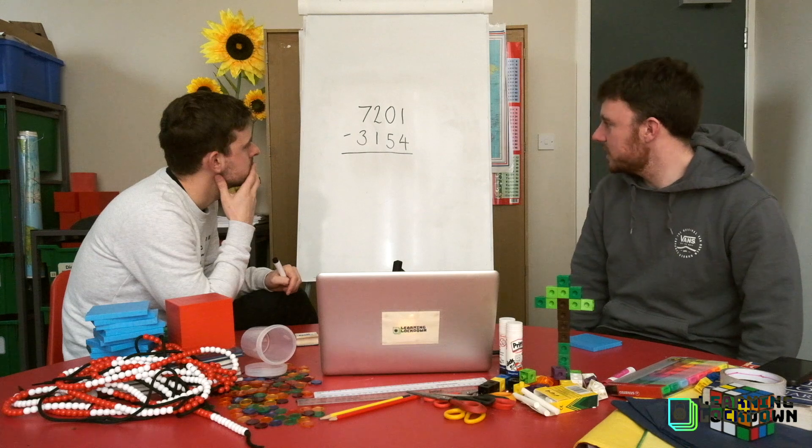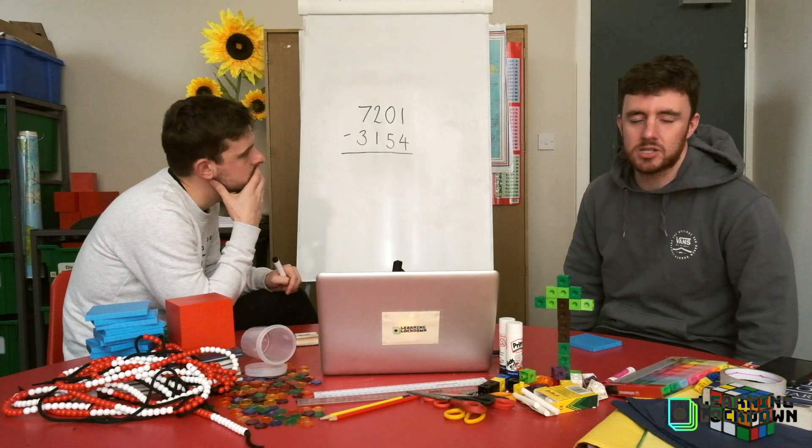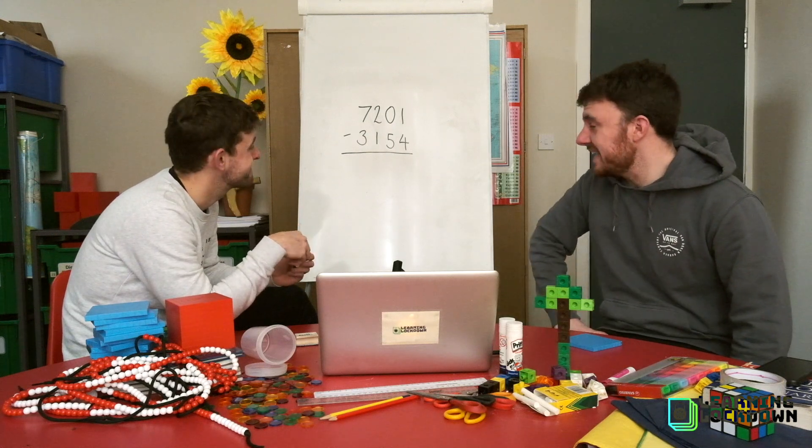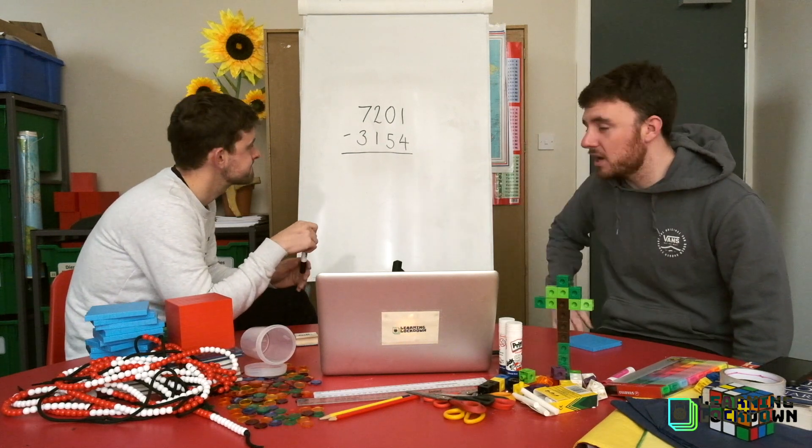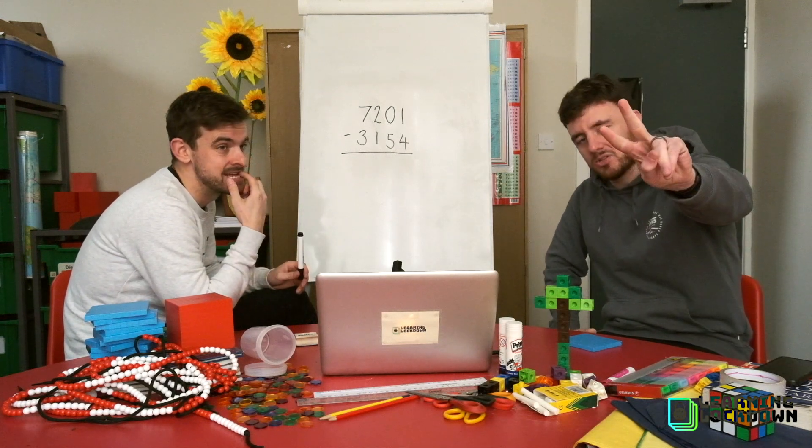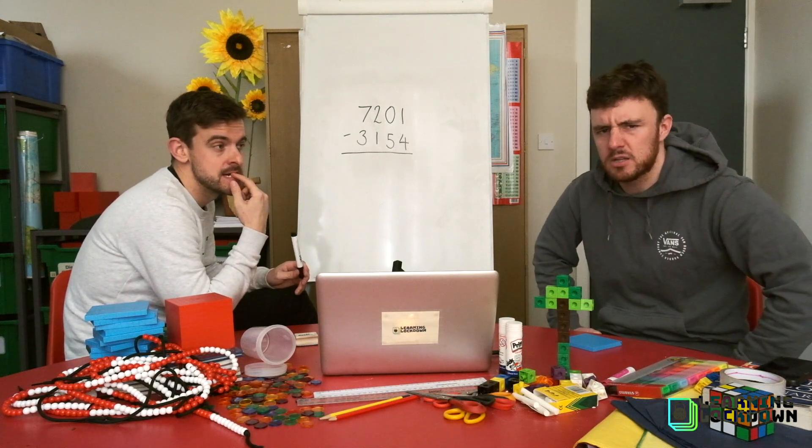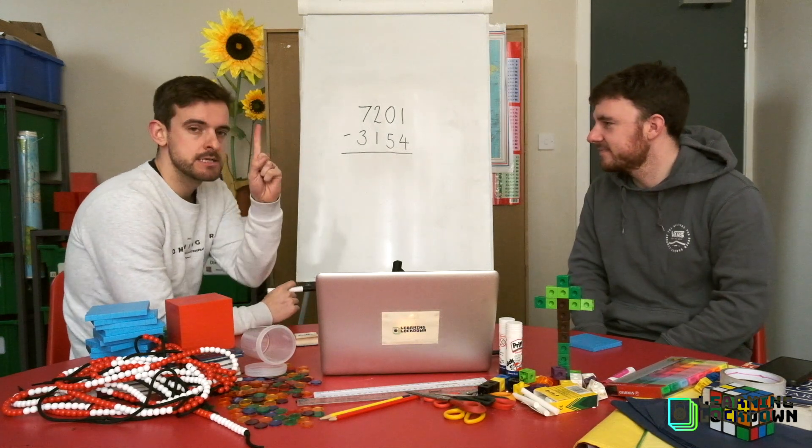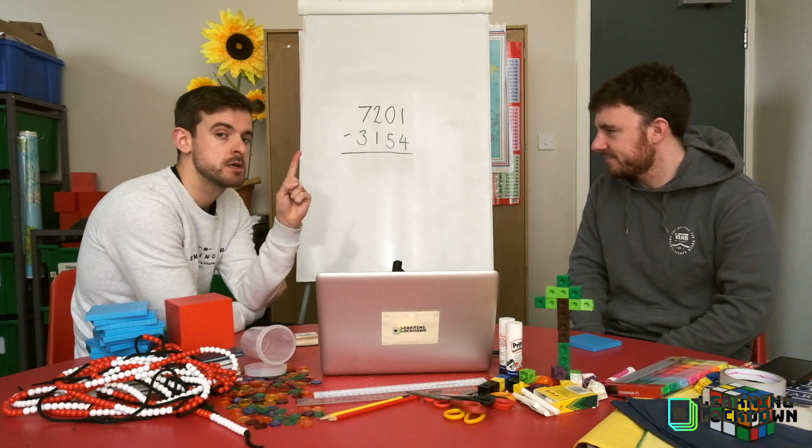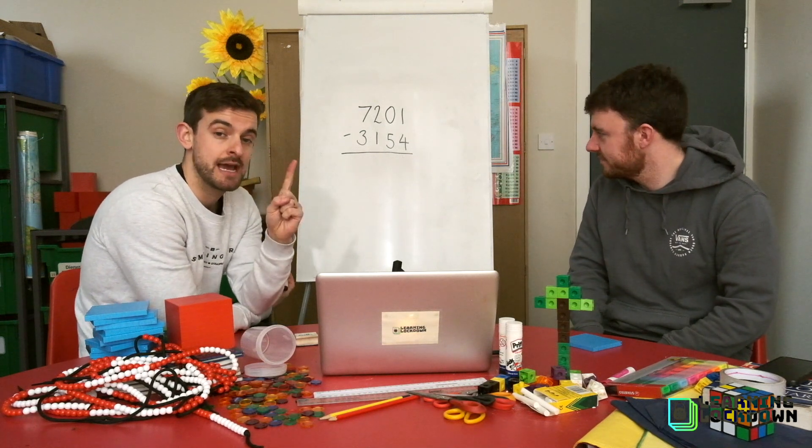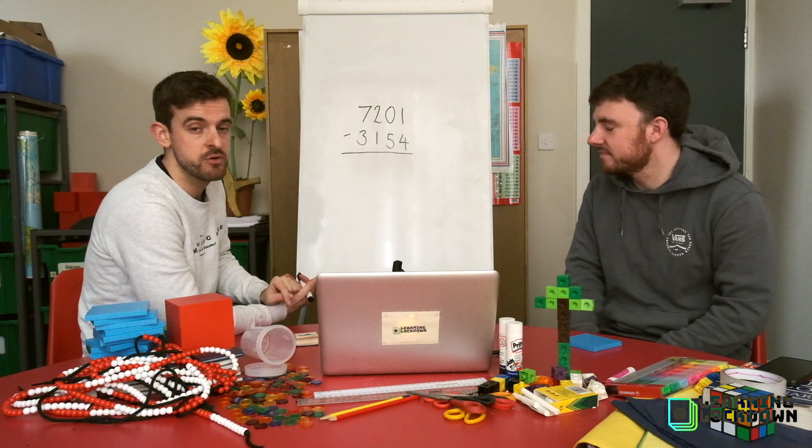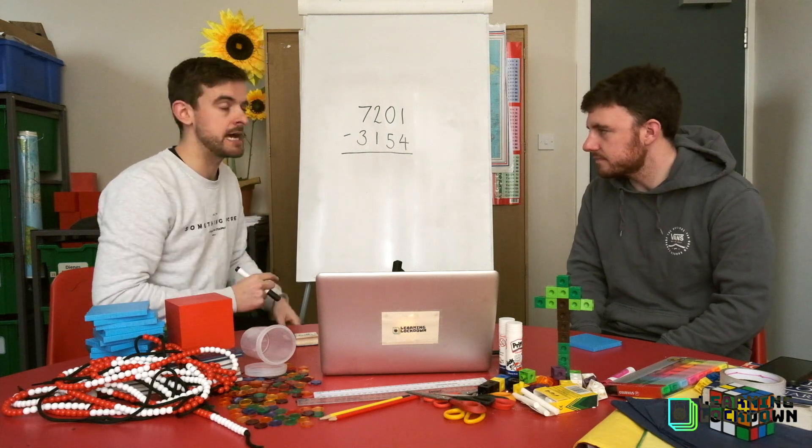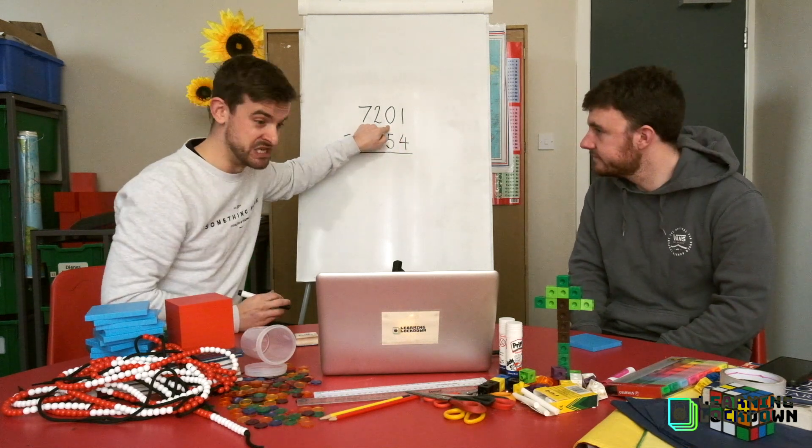Yes. Well done. We can clearly see that the ones is going to involve some regrouping. Because the large number here is below. And we can also see that the tens is going to involve regrouping too. Because the large number is below. So we already know that there's going to be at least two columns that require regrouping. So let's get in there. Start with the ones. One lot of one. Take away four lots. Can't do it. It's not possible. So we have to start borrowing or regrouping from our other columns.